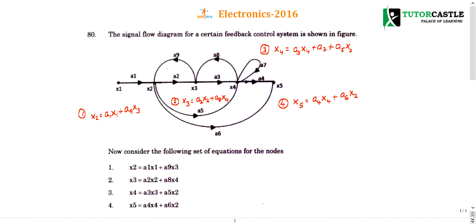First, at node 2, what are the incoming branches? This is one incoming branch, this is one incoming branch, all are outgoing branches. So at the node, what are the incoming branches will equal that node value. So x2 is nothing but incoming node from x1: a1x1, plus incoming node a9 from x3: a9x3. This is a simple way of writing.